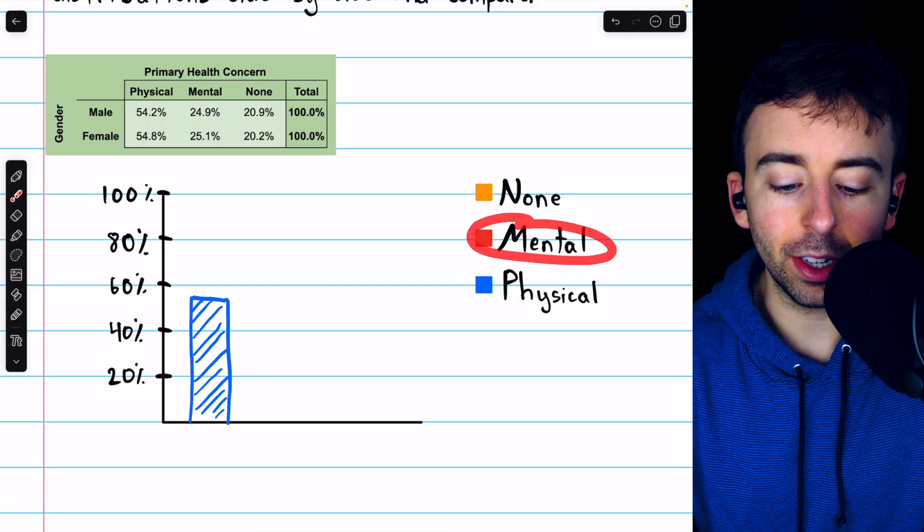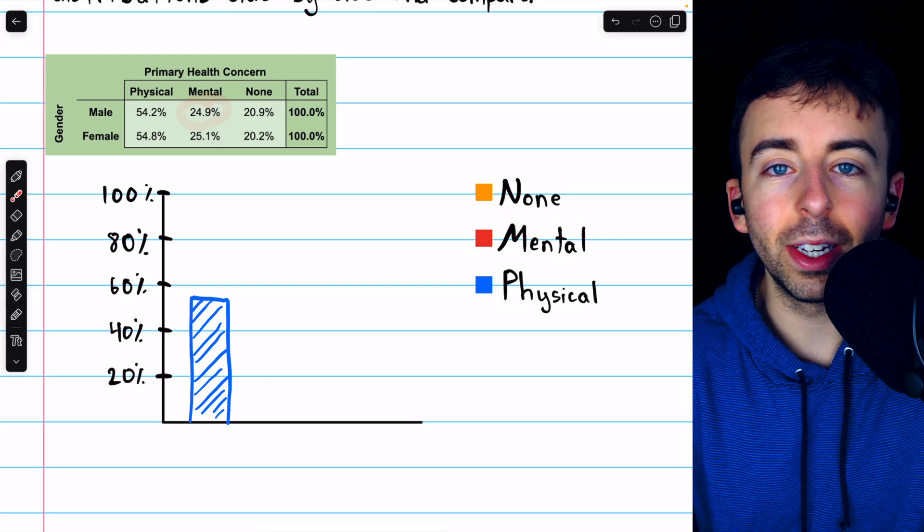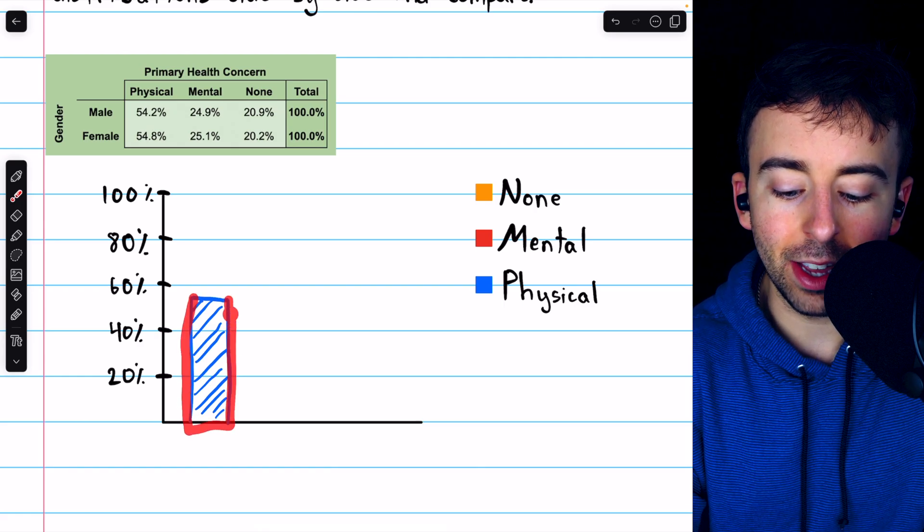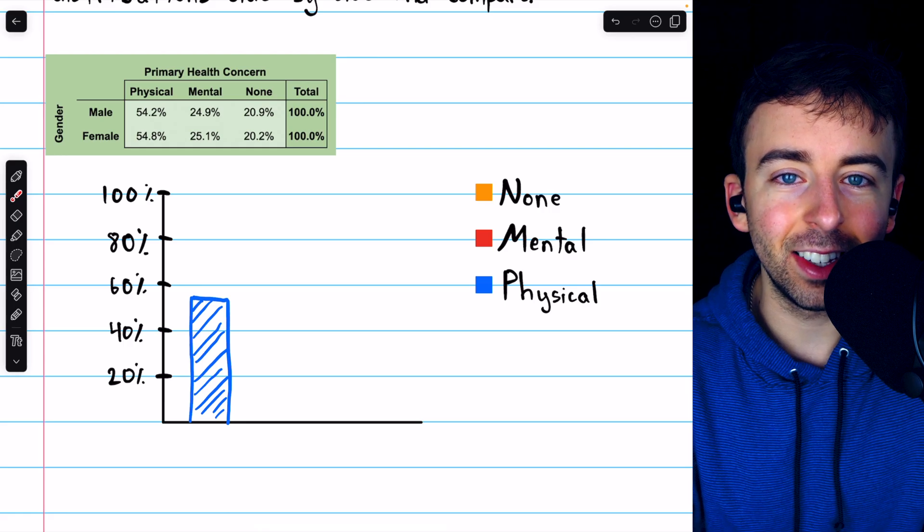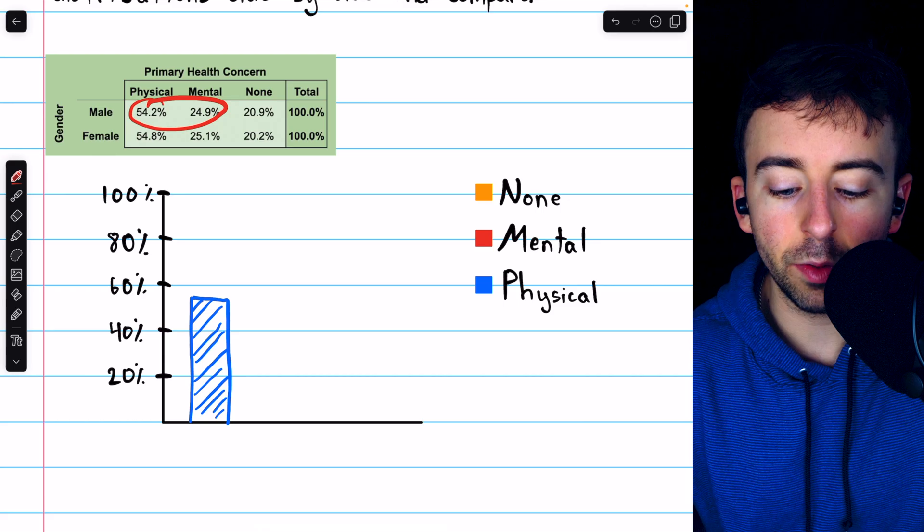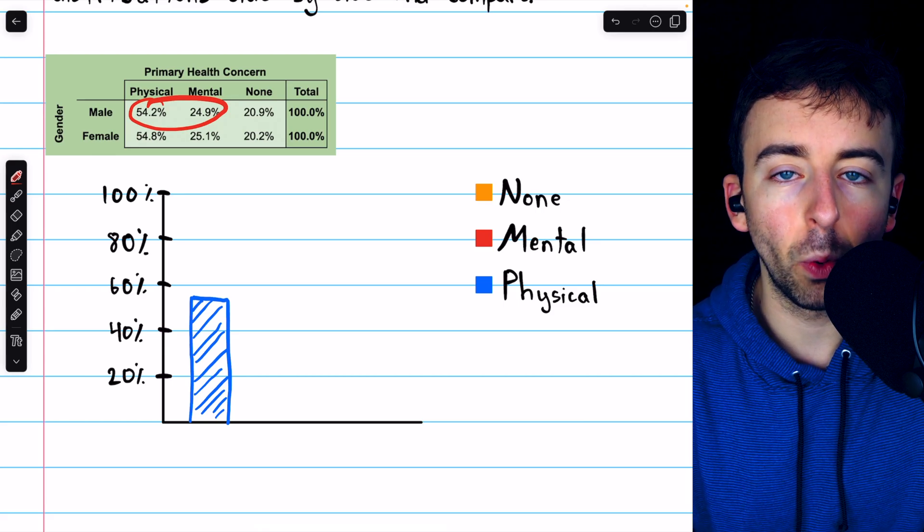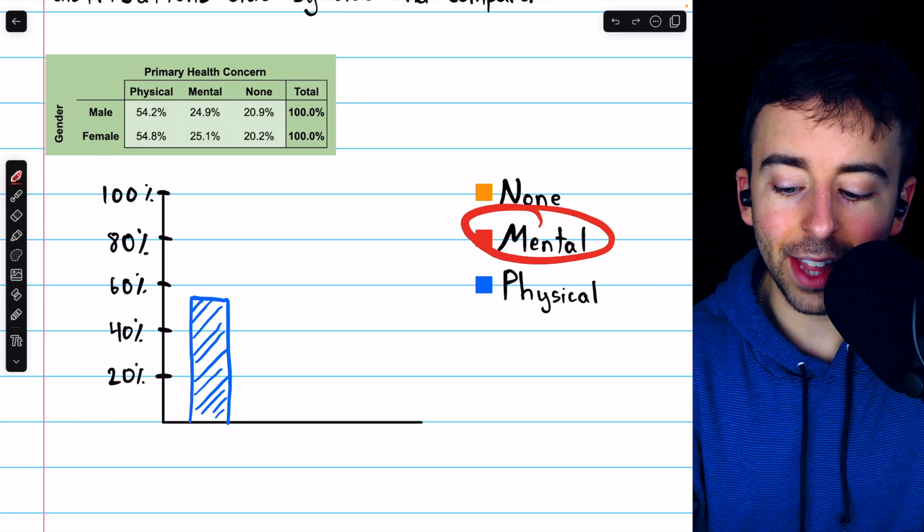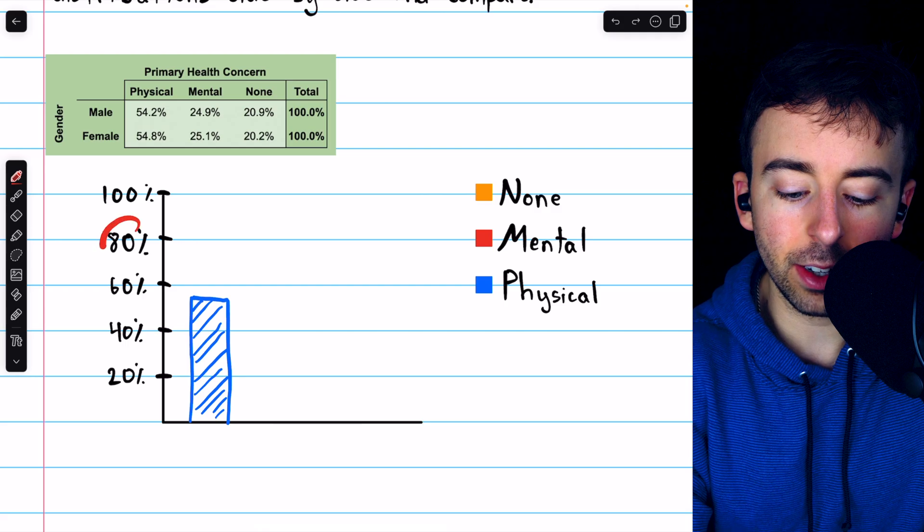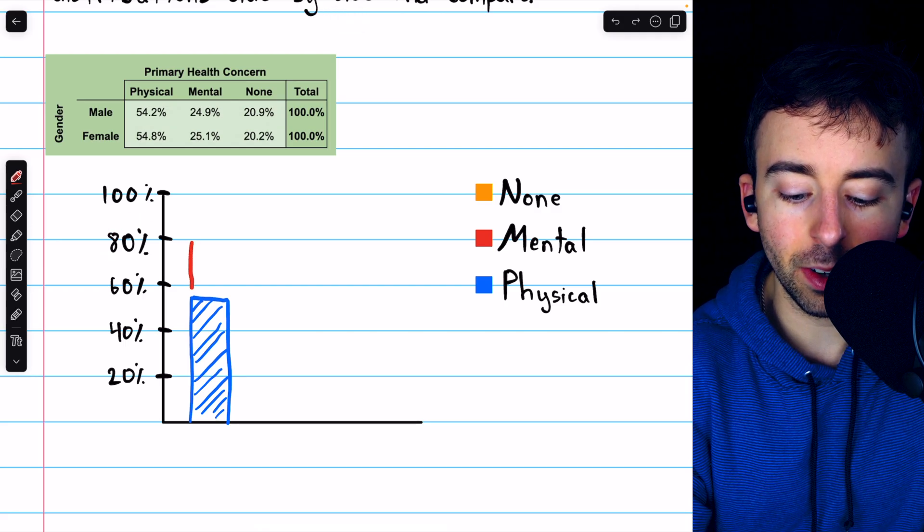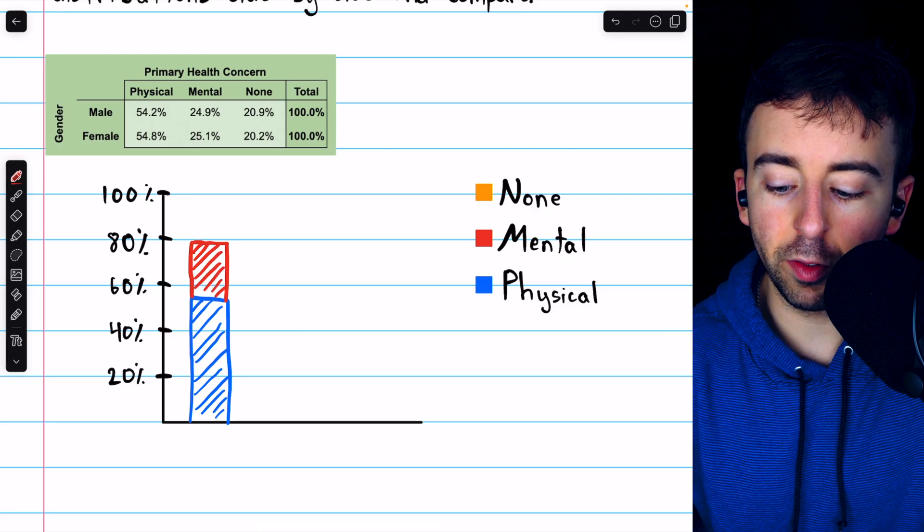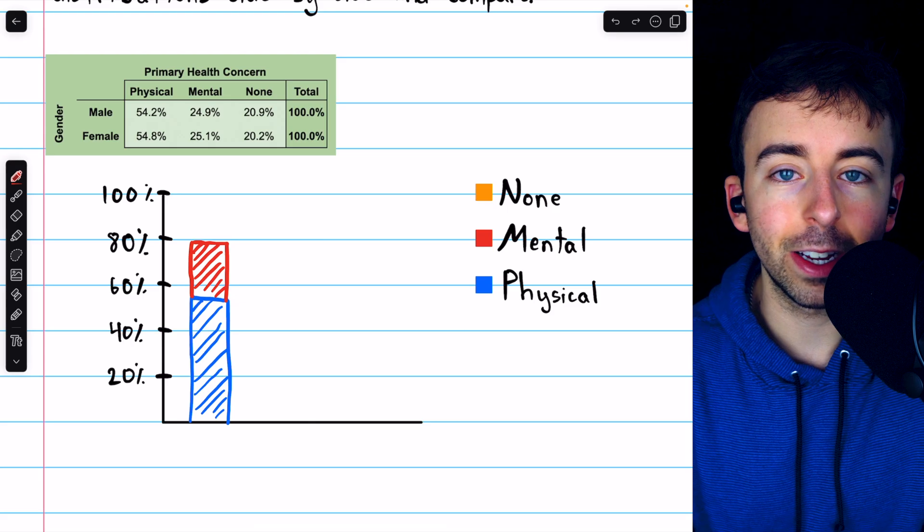Next, we'll look at the mental health concerns. For males, that was about 24.9%. So we're going to stack this on top of this bar. So you need to do addition to see how high this should go. 54.2 plus 24.9 is 79.1. So when we add this red segment onto the bar, we should be going up to about 79.1%, which is just under 80%. So something like that. And again, I will shade this red. And that's the portion of men which had mental health concerns as their primary concerns.